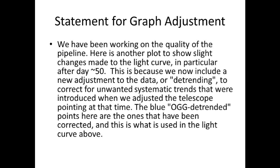So this is the explanation given: we have been working on the quality of the pipeline. Here is another plot to show slight changes made to the light curve, in particular after day approximately 50. This is because we now include a new adjustment to the data, or detrending, to correct for unwanted systemic trends that were introduced when we adjusted the telescope pointing at that time. The blue OGG detrended points here are the ones that have been corrected, and this is what is used in the light curve above.